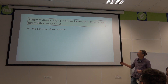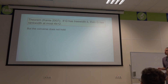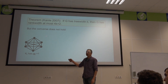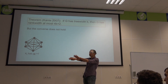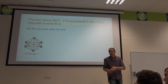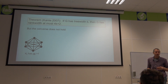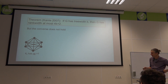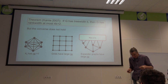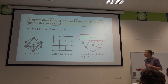Courcelle showed in 2007 that if G has tree width at most k, then G also has rank width at most 4k, so there's a bounded relationship between the two. But the converse does not hold. Consider the clique: if I take any partition of its vertices, the graph going between the two sides is the complete bipartite graph, so the bipartite adjacency matrix is all ones, which has rank one. So the rank width of a clique is one. But grids and expander graphs have large rank width.